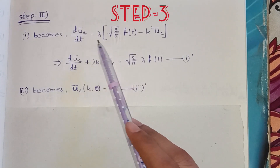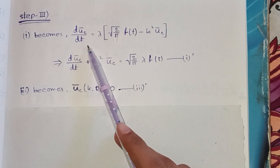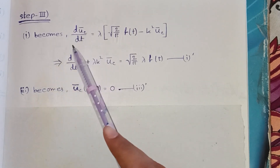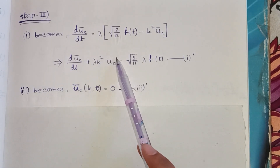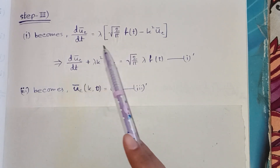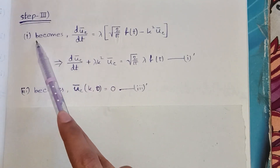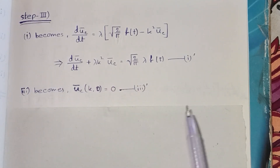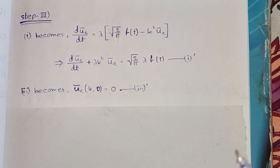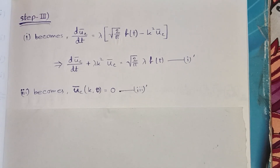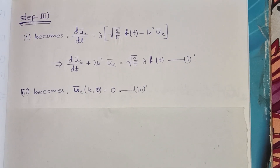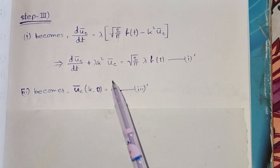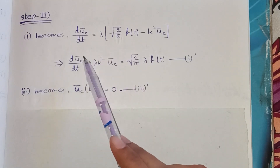Now let's go to Step 3, where we transform the whole equation into its Fourier cosine transform. Notice that I have transformed only equations 1 and 3, and not 2 and 4, because those were already used in previous steps and are no longer needed. So the equation becomes this new transformed form.